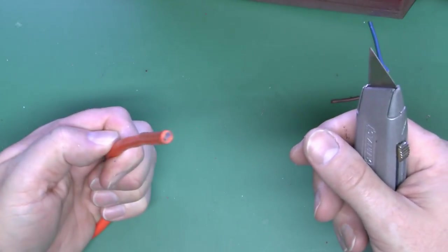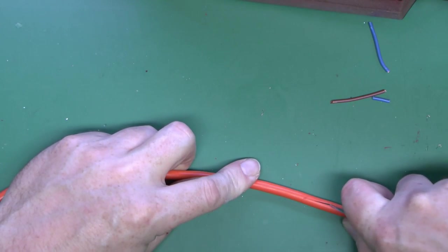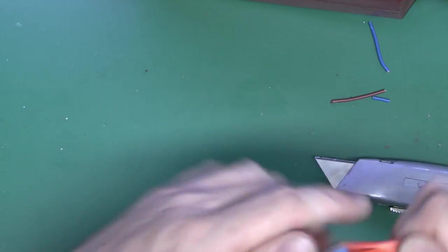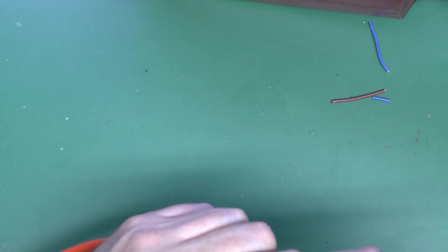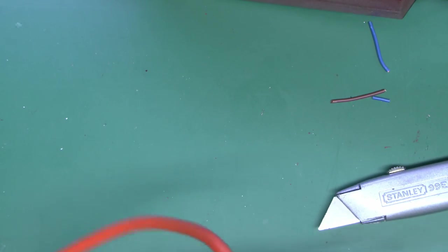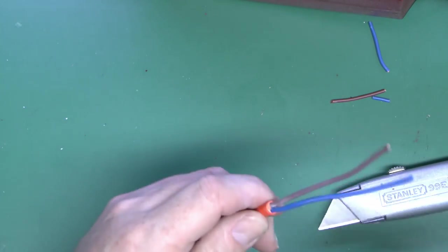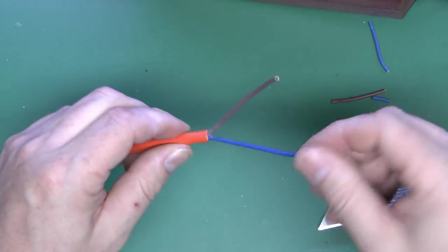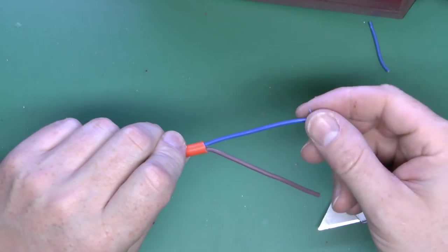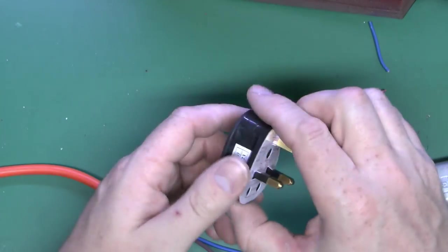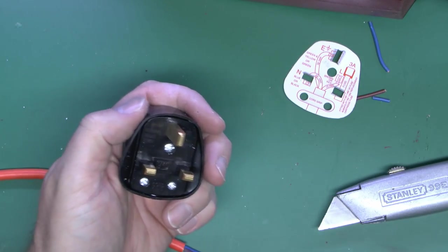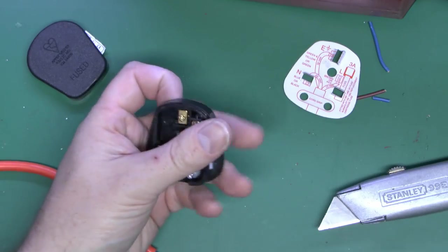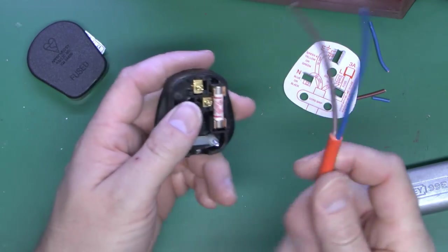We just need to fit a new plug onto the other end of the new flex we just put there. As before we'll just score that and cut in towards the end of this, peel that back and score around the outside, and that will just break away. Don't cut too deeply, you don't want to cut right through, just literally score so that you can break away the outer insulation. So a plug here, this is a black one, and it comes with a 3 amp fuse already installed which is ideal for this device which is only 450 watts.